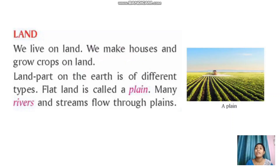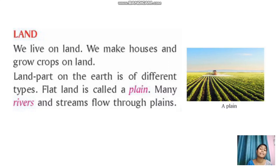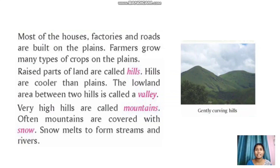Let's see the next thing — that is land. The land is the place where we are living, and there are different types of land: plains, plateaus, and a lot of things. Also, many people do agriculture on the land and many of them depend on the land. Most of the houses and factories are built in plain areas, and farmers grow agriculture in the plain areas.